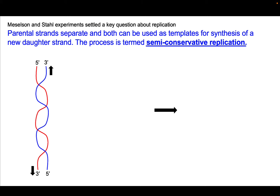There were several models originally to describe how these DNA strands would be synthesized. There were some really instrumental experiments done by Meselson and Stahl that settled a key question about replication. What they showed was that each parental strand separates, and both can be used as templates for synthesis of a new daughter strand. This process was termed semi-conservative replication. It's called semi-conservative because the new strands each have a parental strand — so that parental strand is conserved.